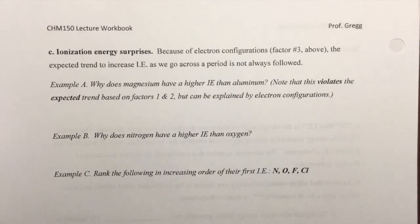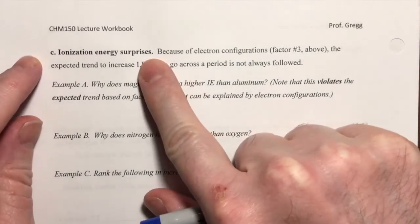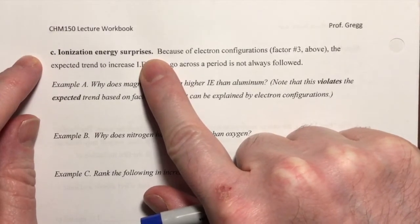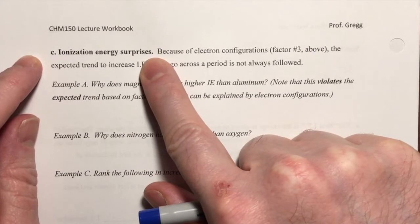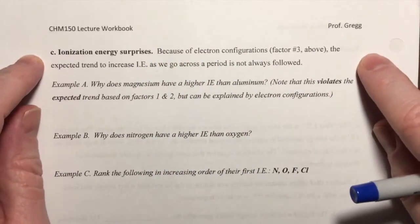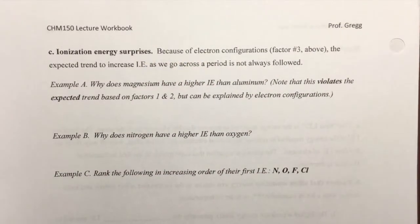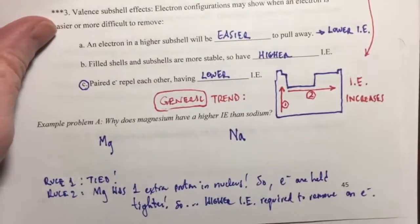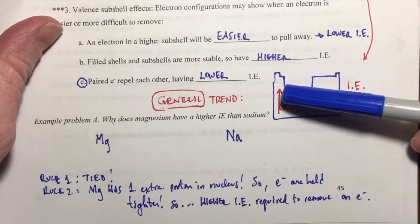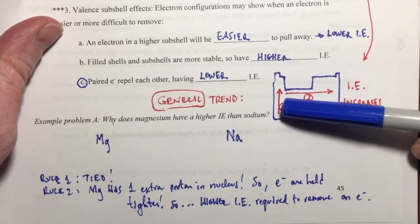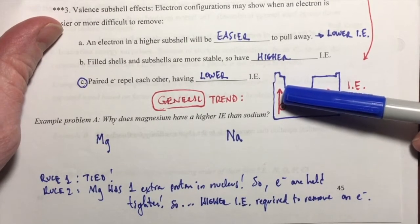Hi students. In this video I'd like to talk about some surprising or unexpected behavior in the ionization energy trend. Remember in the previous video I talked about the general trend that we should be able to expect ionization energy to increase as we move up a group, because the n value is decreasing, the atom is getting smaller, and as the atom gets smaller the electrons are held tighter to the nucleus, and that requires a greater ionization energy to pull an electron away.